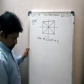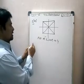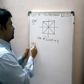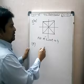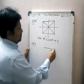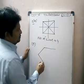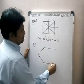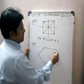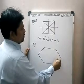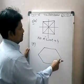Next question, part E — hexagon. This is a hexagon shape. Hexagon means a six-sided figure is called a hexagon.